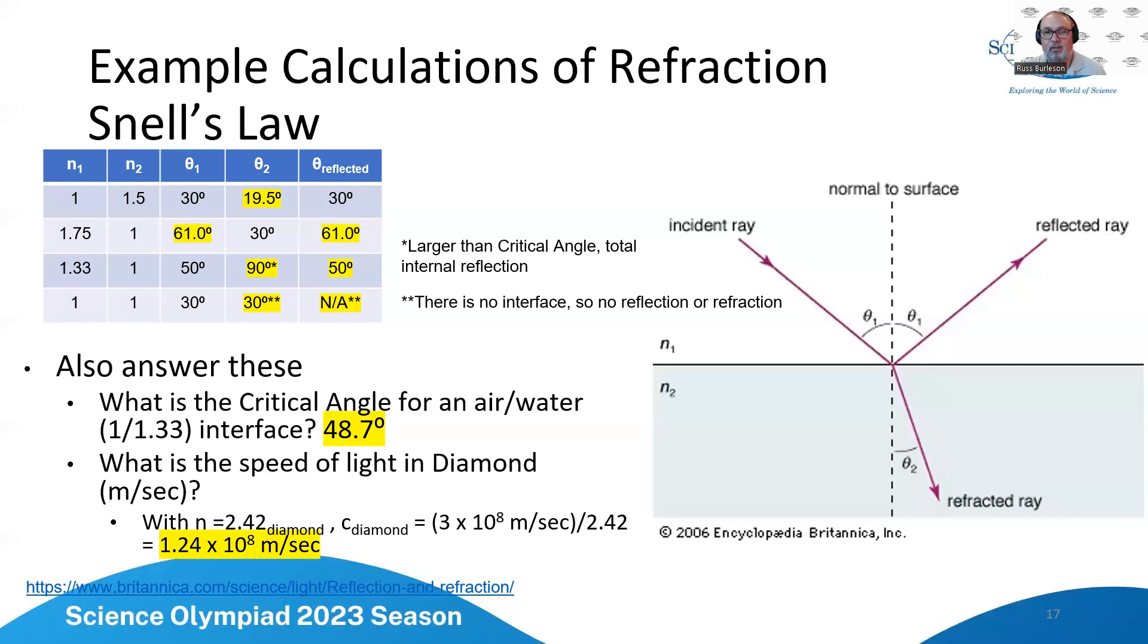And you'll notice that's also the same as the reflective. And the same thing occurs when I do 1.33 at 50 degrees. Well that's beyond the critical angle so therefore we have total internal reflection. And so now what ends up happening is the only thing that we really have is theta one and theta reflected. And then if I have one and one there is no interface so there's no reflection or refraction, it just goes through like it's going through a single media. The critical angle for air water or one to one point three three interface is 48.7 degrees and the speed of light in diamond with n equals 2.42 is equal to three times ten to the eighth meters per second divided by 2.42 is equal to 1.24 times ten to the eighth meters per second.